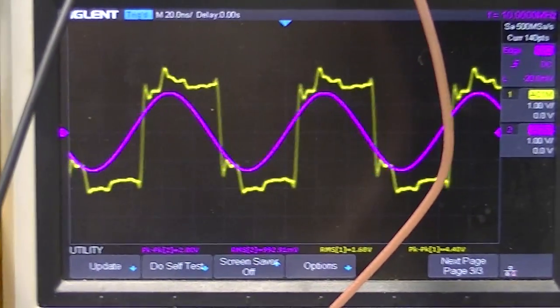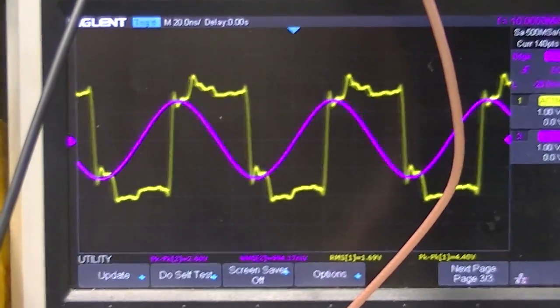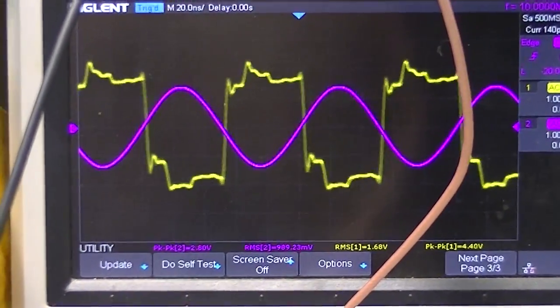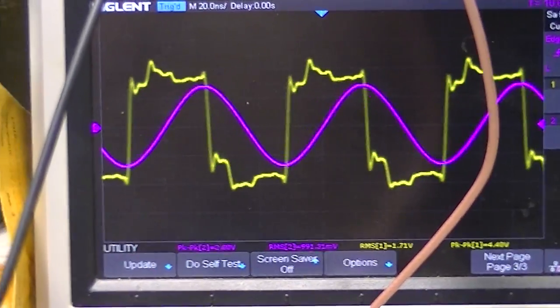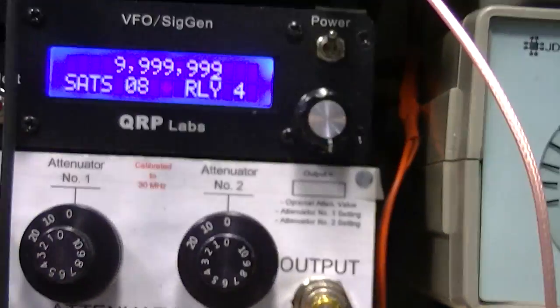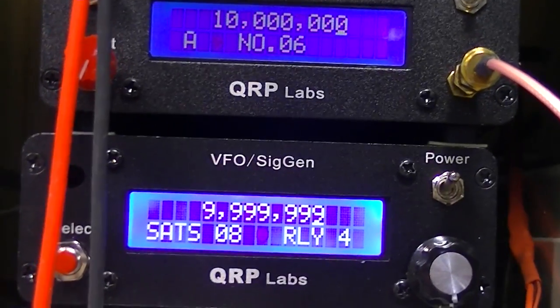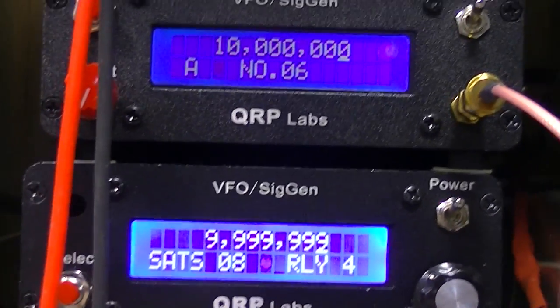Please excuse the handheld camera, but there's two signals appearing on the oscilloscope. Those signals are coming from a pair of QRP Labs GPS disciplined oscillators.